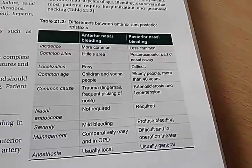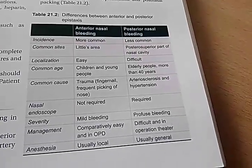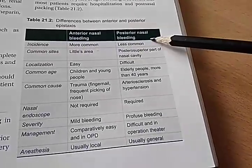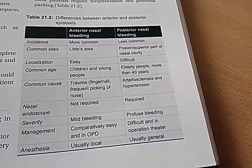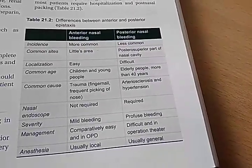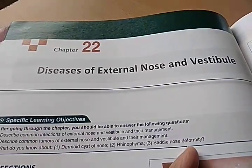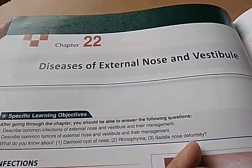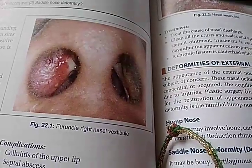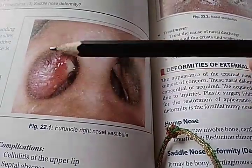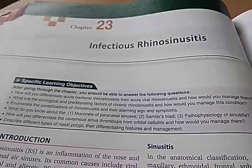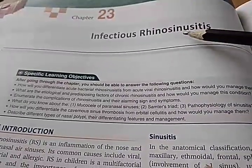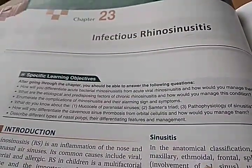Some tables are given in this textbook — differences between anterior nasal bleeding and posterior nasal bleeding (epistaxis). Then they are talking about diseases of the external nose and vestibule — here's a furuncle. Rhinosinusitis: earlier it was just sinusitis, now it is rhinosinusitis, including the nose.